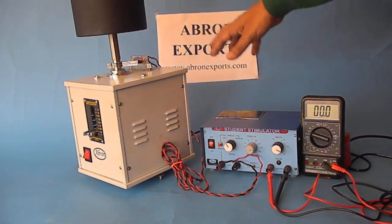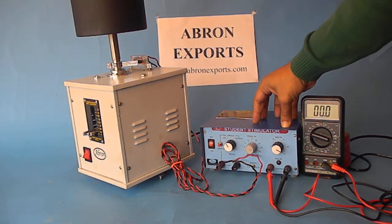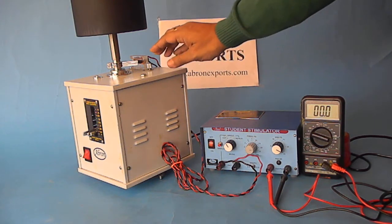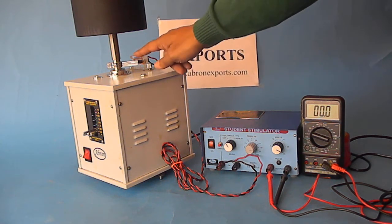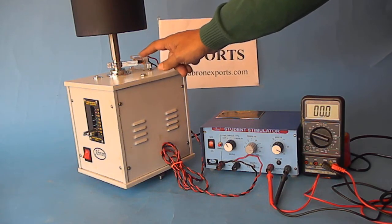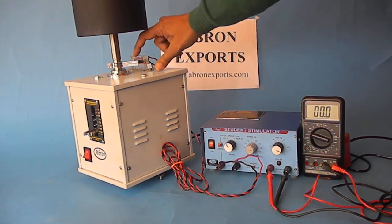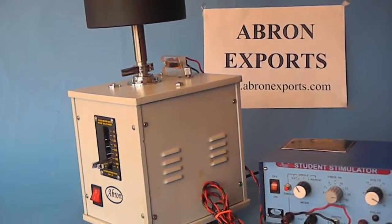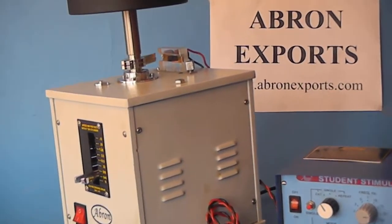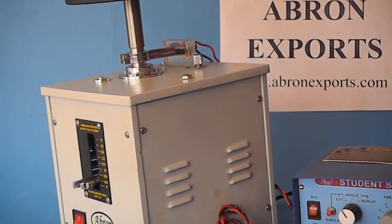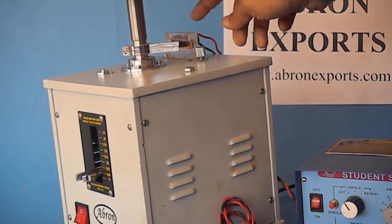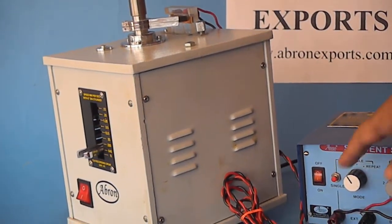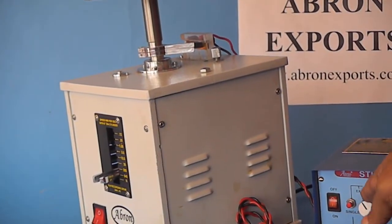This is the stimulator by Abron Export and this is the chymograph for getting a stimulator pulse. This is the pointer which touches this point, and when it moves like this on rotation by speed selection, it touches here and gives a pulse from the chymograph to the stimulator.